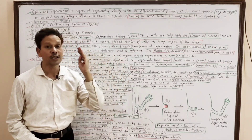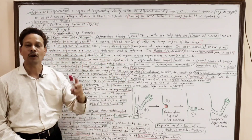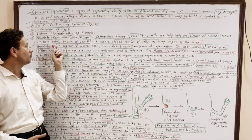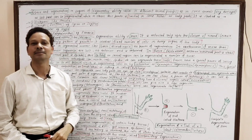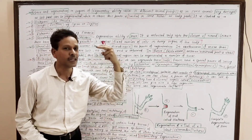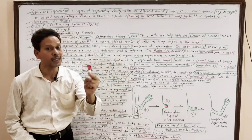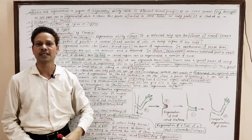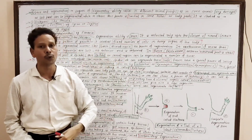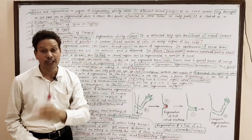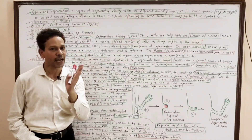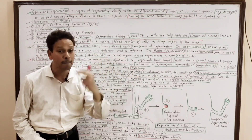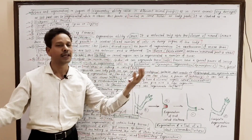In case of nematodes (roundworms) like Ascaris, the power of repair and regeneration is very poor. These organisms show a definite pattern of growth called eutely, meaning there is a fixed number of cells in every body part. Competitive exam students, please note this down.